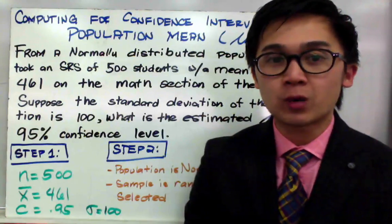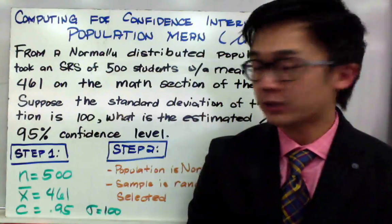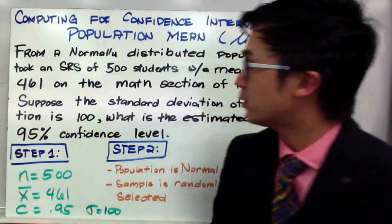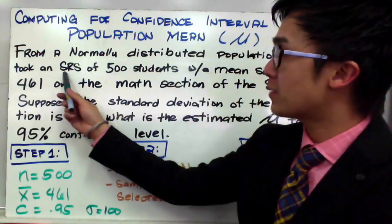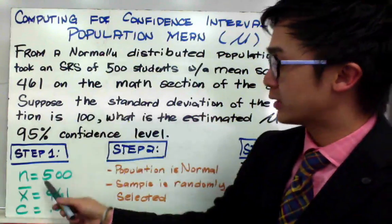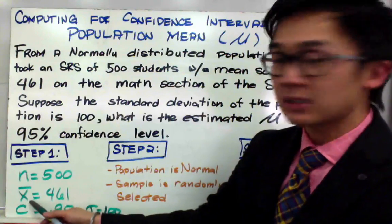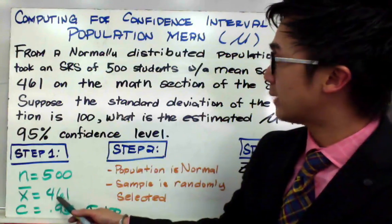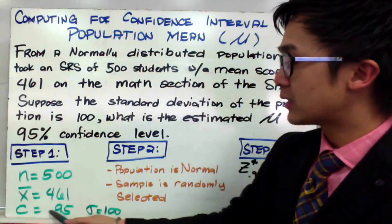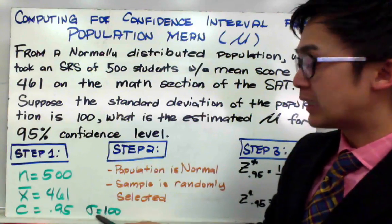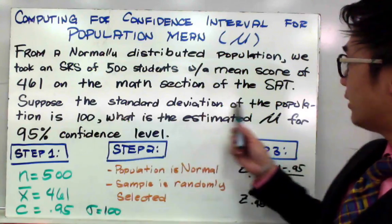The first step in performing confidence interval or computing for the confidence interval is to organize your given values. We are given the sample size which is 500 students, and we know it's the sample because it's from the simple random sample of 500 students. So n equals 500. Our sample mean is also given which is 461 points because it came from the SRS of 500 students. The confidence level is 0.95 and the population standard deviation is equal to 100 points, which is given in this part of our word problem.